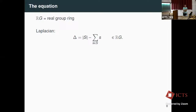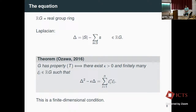We work in the real group ring, where the Laplacian is an element. The new methods emerged from a result of Ozawa — a preprint in 2014, published in 2016 — showing that G has Property T if and only if there exists a positive κ and finitely many elements in the group ring such that Δ² − κΔ is a sum of squares.